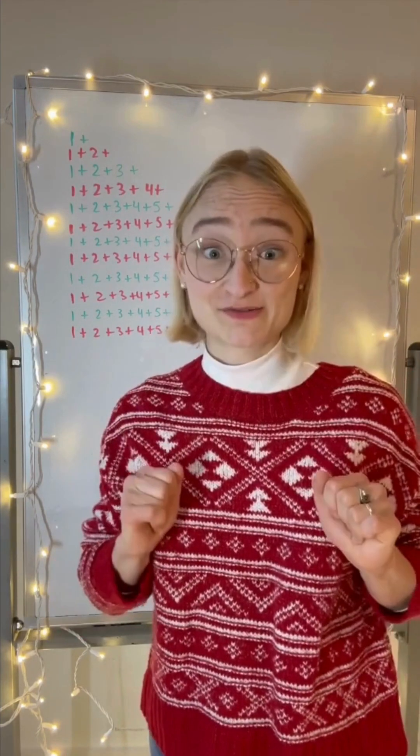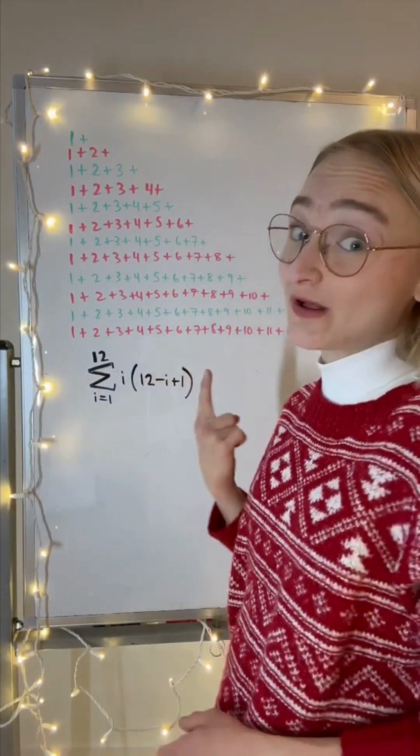But also there's a much faster way to add up these gifts. I present to you summation notation. We're adding up 12 different types of gifts, so our sum goes from one to twelve. For some gift i, every day that we receive it, we receive i of that gift.